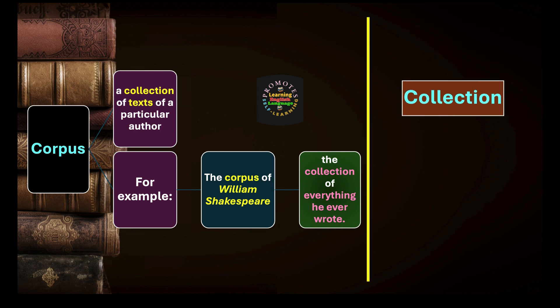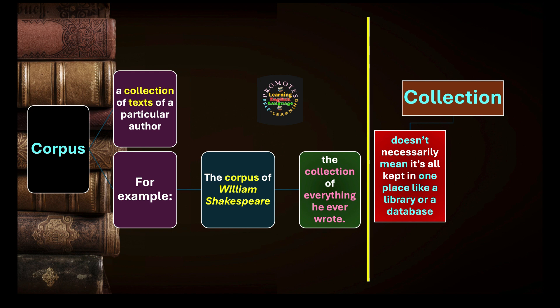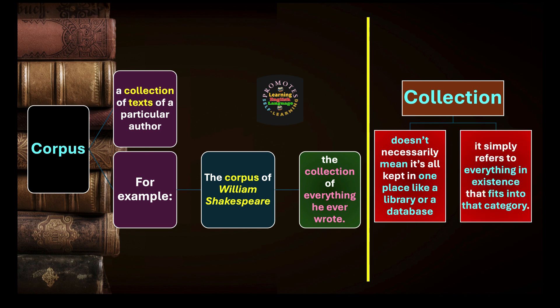What we have to notice is that there is a difference between corpus and collection. Collection doesn't necessarily mean it's all kept in one place like a library or a database, which corpus does. Collection simply refers to everything in existence that fits into that category. There is a difference: collection is about grouping something into a particular category, while corpus is kept in one place in a large database.